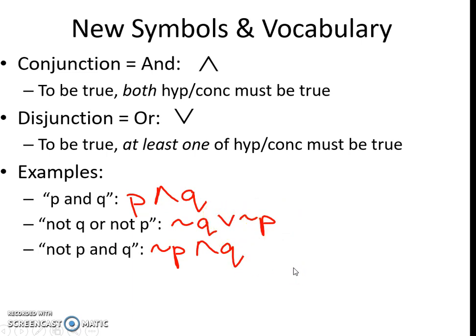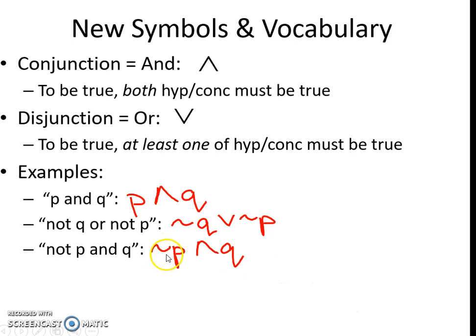NOT P and Q: NOT is in front of P — NOT P and Q. Notice there's NOT in front of P only, so don't put that negation sign in front of Q. This is read NOT P and Q.